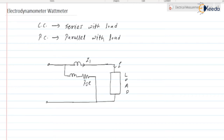RSE is the resistance of the potential coil — or we can say the series resistance of the potential coil. The current flowing through the potential coil is I2.